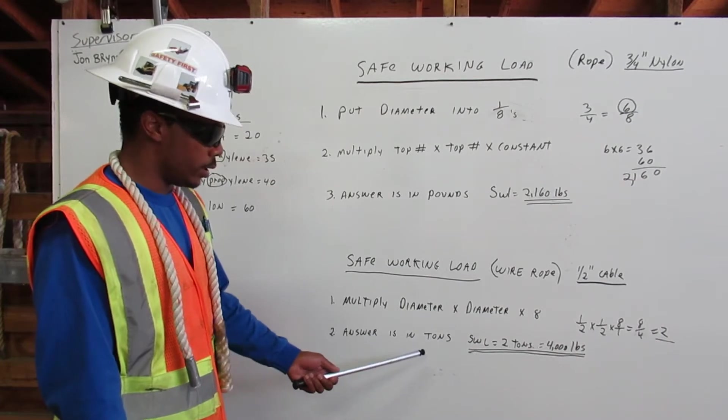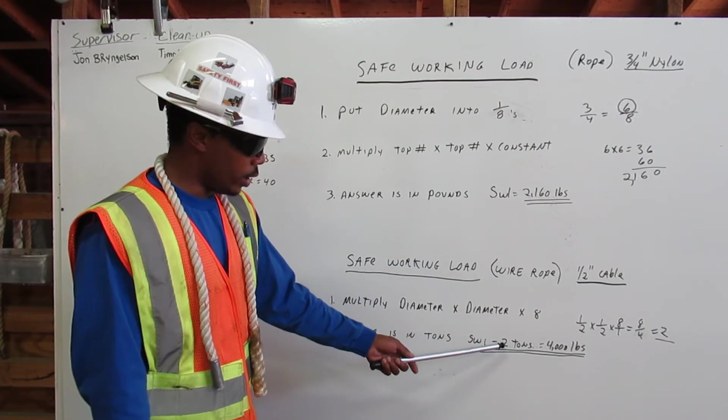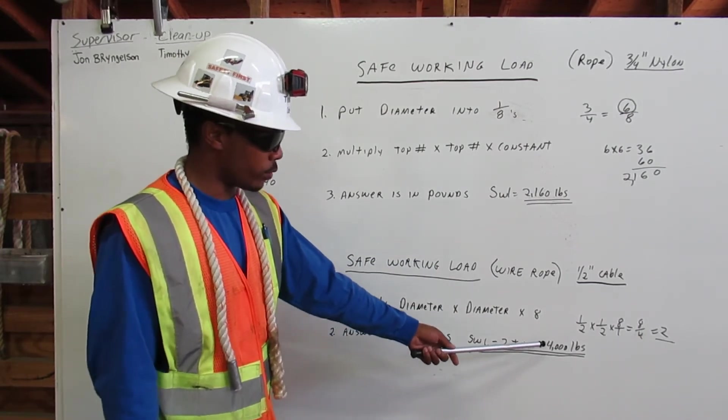The answer is in tons. So, the safe working load for a half inch cable equals 2 tons, which equals 4,000 pounds.